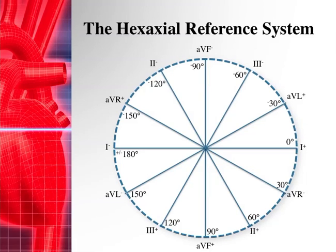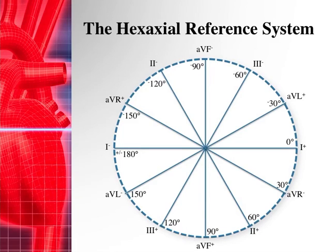This is the hexaxial reference system, and that's where we get our angles when talking about axis deviation. If I say your QRS axis is at about 95 degrees, you can find that right here on the diagram — and that means that aVF should have the most upright QRS complexes, because aVF's positive electrode is down here. I've marked the positive and negative symbols on the hexaxial diagram.